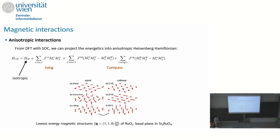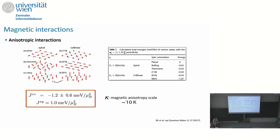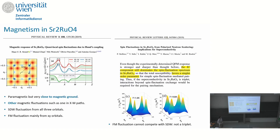On top of this, we studied the anisotropic terms including spin-orbit coupling. We estimated the related terms and compared them to experimental values, finding reasonable agreement with our DFT computation of the magnetic interactions. Beyond ferromagnetism and spin-density-wave instabilities, the susceptibility calculation reveals many other peaks at different q-vectors, suggesting additional magnetic instabilities beyond just the spin-density-wave signal.